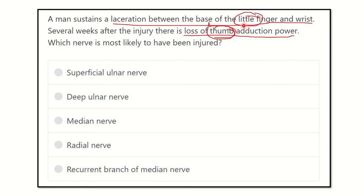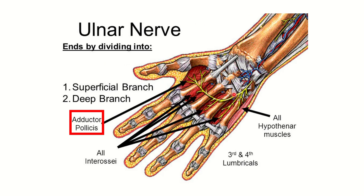We need to find a nerve that crosses near the little finger but supplies the thumb. We can see here a nerve traveling from the fifth finger region, crossing over, and finally going to the thumb. This nerve is responsible for the injury — it travels through the ulnar region and finally goes into the adductor muscle of the thumb.